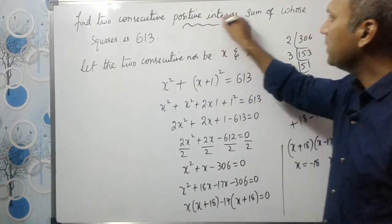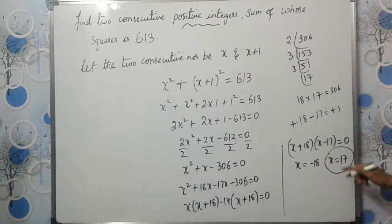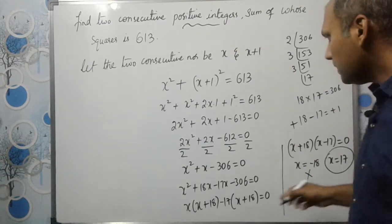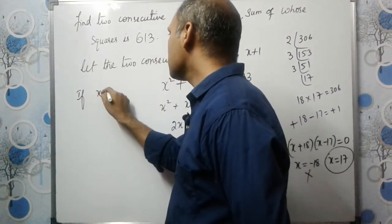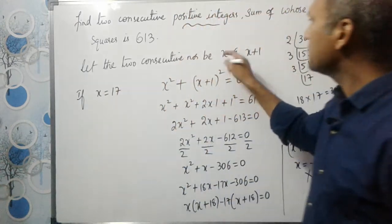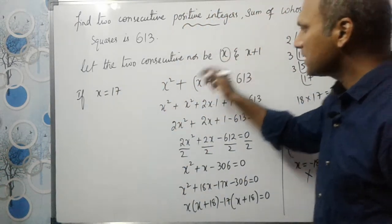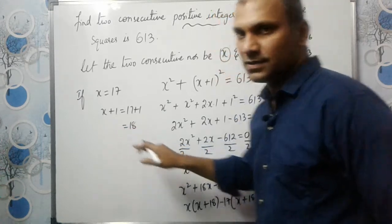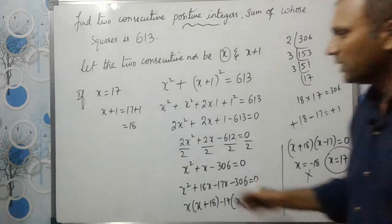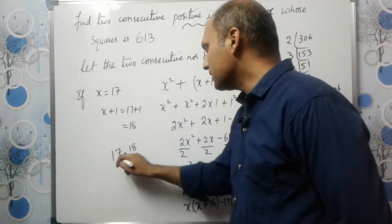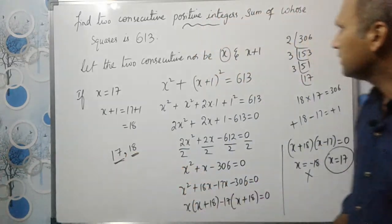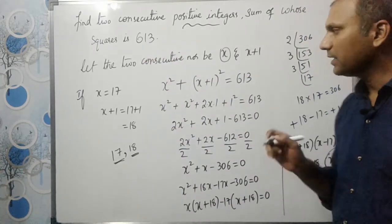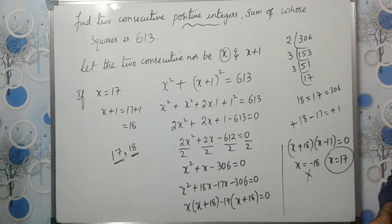Since we need positive integers, we take x equals 17, not minus 18. So the first number is 17, and the next consecutive number is x plus 1, which equals 17 plus 1 equals 18. The two consecutive positive integers are 17 and 18. If you square these numbers and add them, you will get 613. I hope you understood this problem. Thank you so much for watching the video.